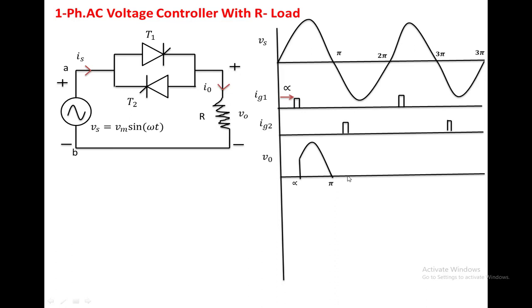From pi to pi plus alpha, no device is conducting, so the output voltage is again 0. At pi plus alpha, the input voltage is negative, so A becomes negative and B becomes positive. With this polarity, T2 is forward biased. The load voltage equals the source voltage, which is negative, from pi plus alpha. Again at 2 pi, T2 also turns off because of the resistive load.